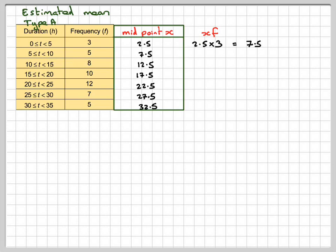Then we have to do x times f. This one appears three times, so that'll be 2.5 times 3, which is 7.5. This one occurs five times, so we have to do five times 7.5. 12.5 times 8, which is 100.